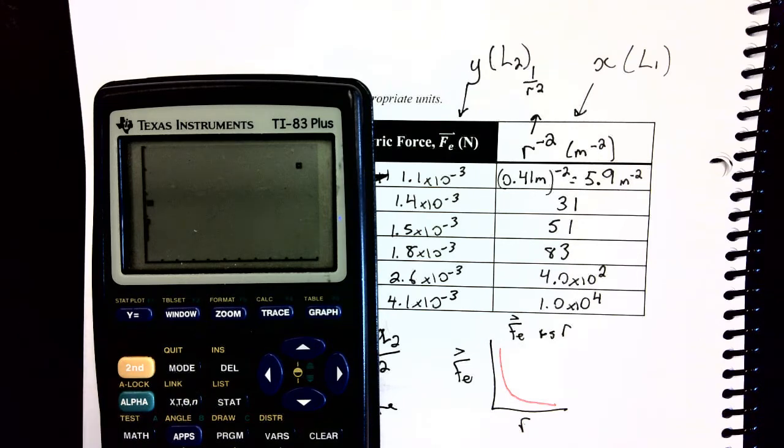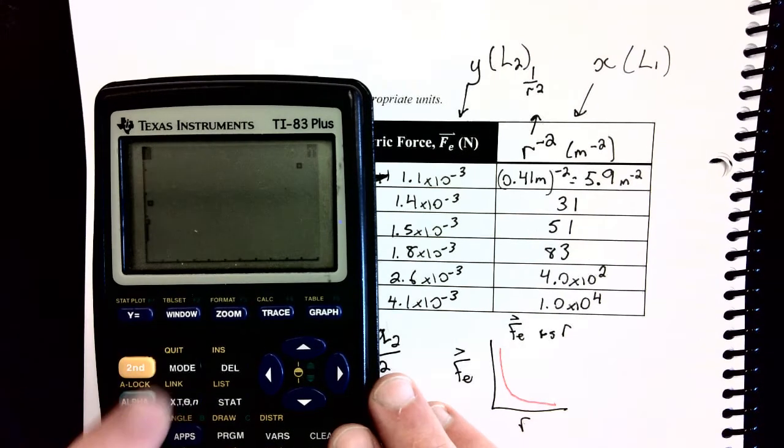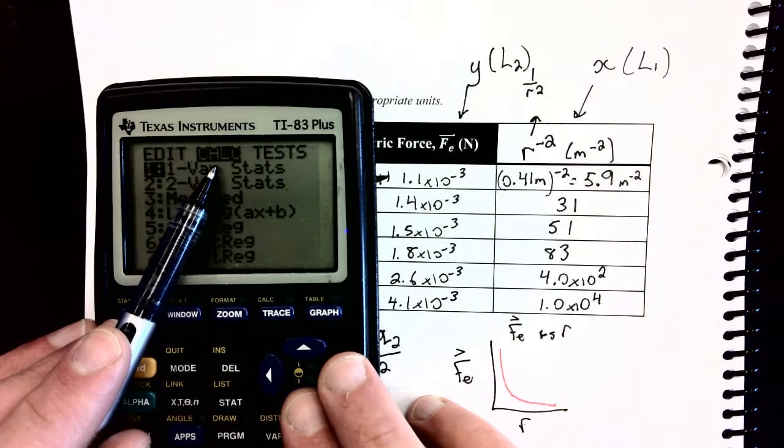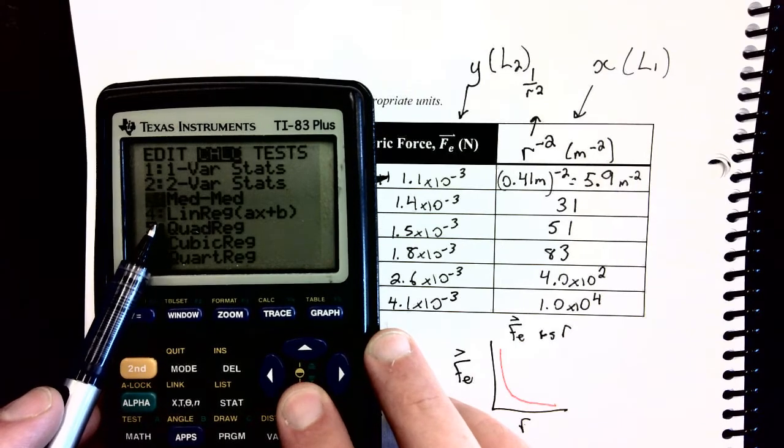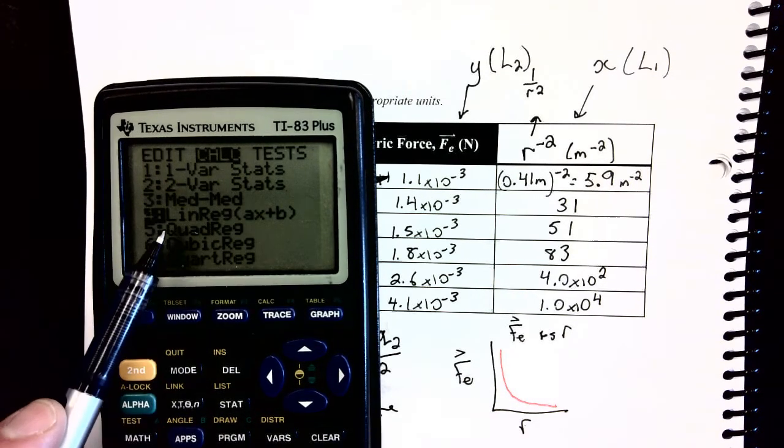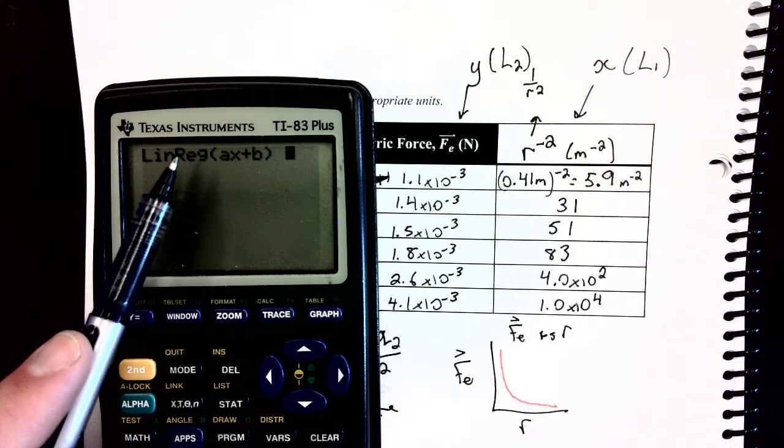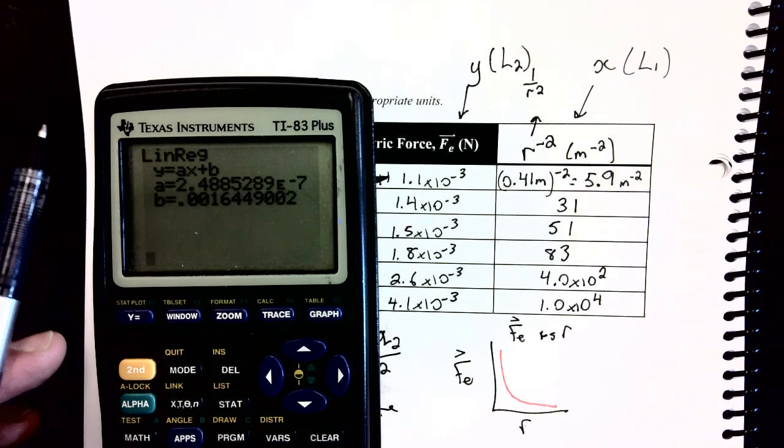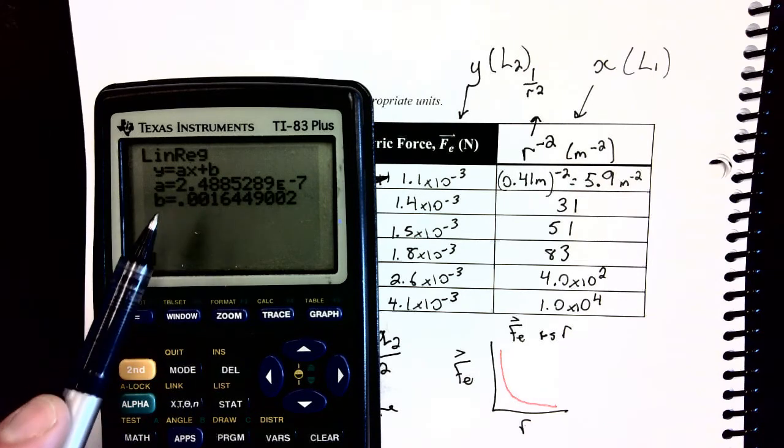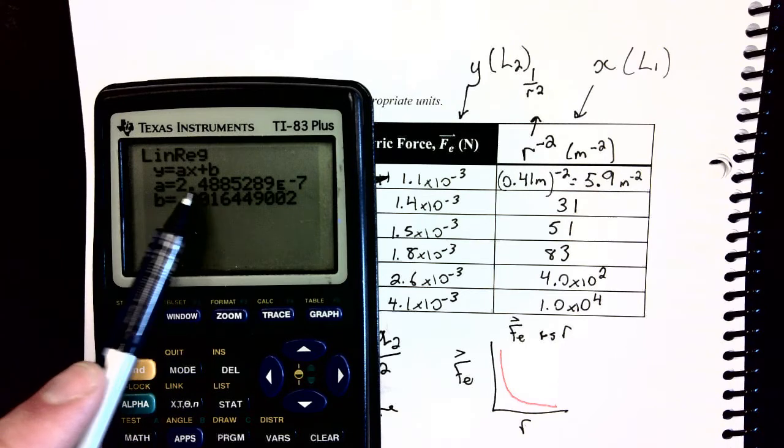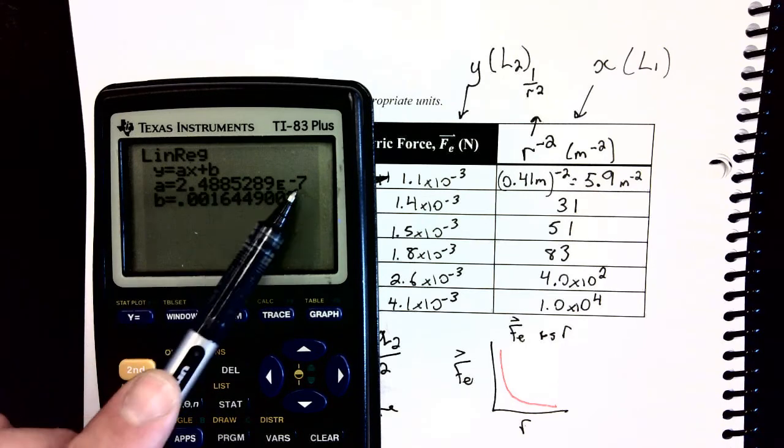I'm going to get the slope of this graph by pressing stat. I'm going to go over 1 to calculate, and I'm going to go down to linear regression. I hit enter on linreg. I've got an older calculator, so once I have that program on the screen, I hit enter once, and it works out the slope for me. You might have to press enter 3 or 4 times on a newer calculator. And I get a slope of 2.5 times 10 to the negative 7.